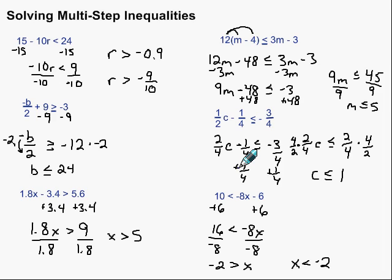Solving multi-step inequalities: remember, the same rules apply as solving multi-step equations — we want to get the variable by itself. The one big thing thrown in is that if we multiply or divide by a negative, we need to flip the inequality after doing so. Other than that, same rules apply. I know you can do it — I hope this was helpful.